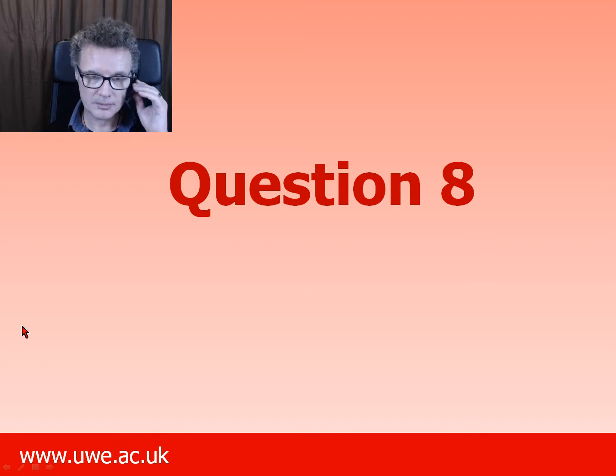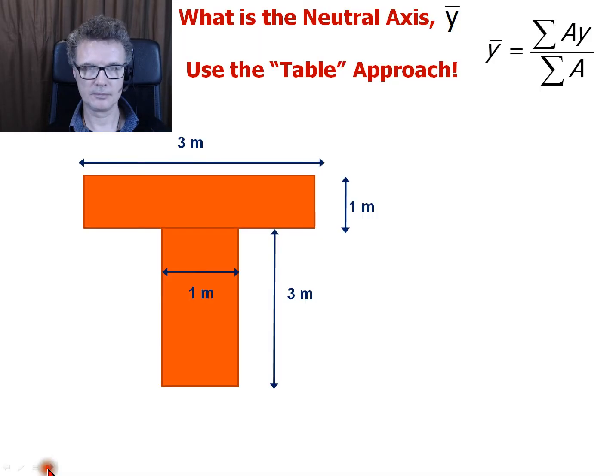Question 8. What is the neutral axis for this system here? We've got a T-bar. So we've got a 1 meter wide, 3 meter long bit of bar there, and we stuck it against another 3 meter long, 1 meter depth bar. So they're both kind of the same sections.